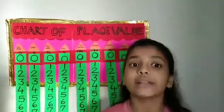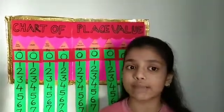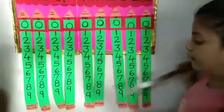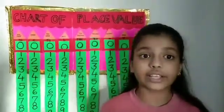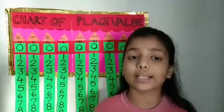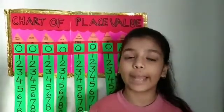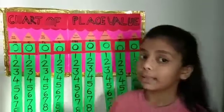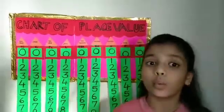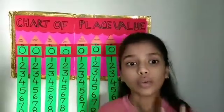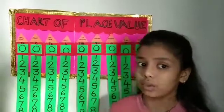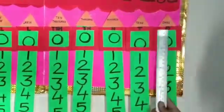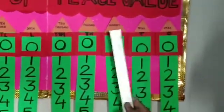There are two types of place value system: Indian place value system and international place value system. Every digit has its own place value depending on the places they are placed. In the Indian place value system we have four types of period. Those are ones period, containing ones, tens and hundreds.